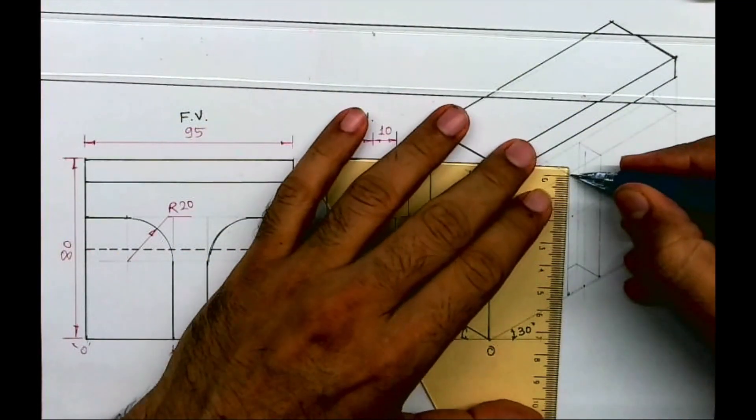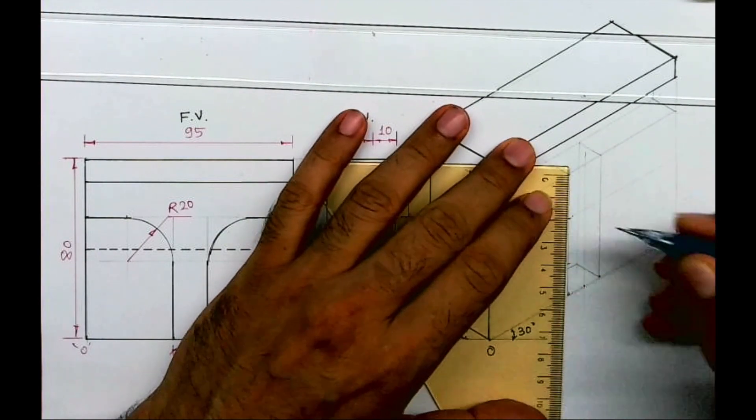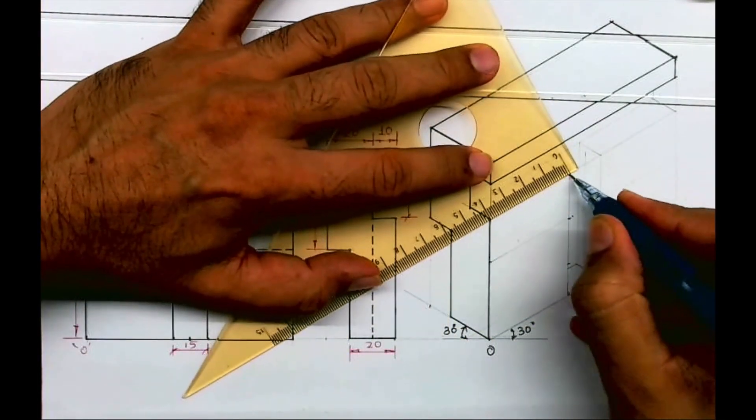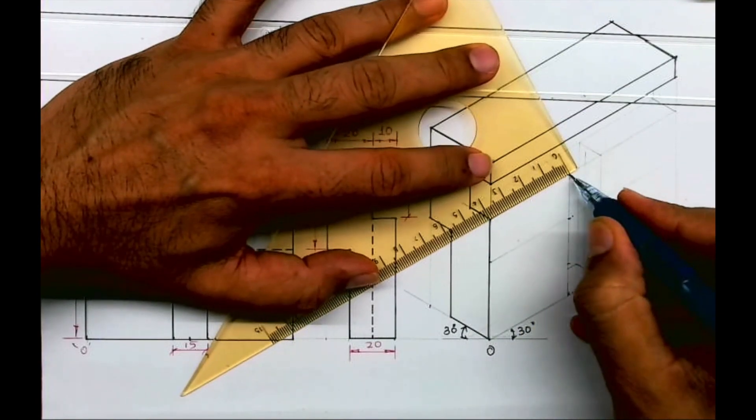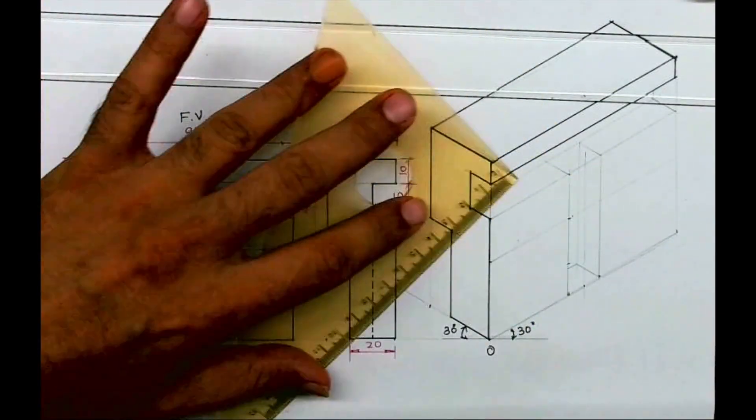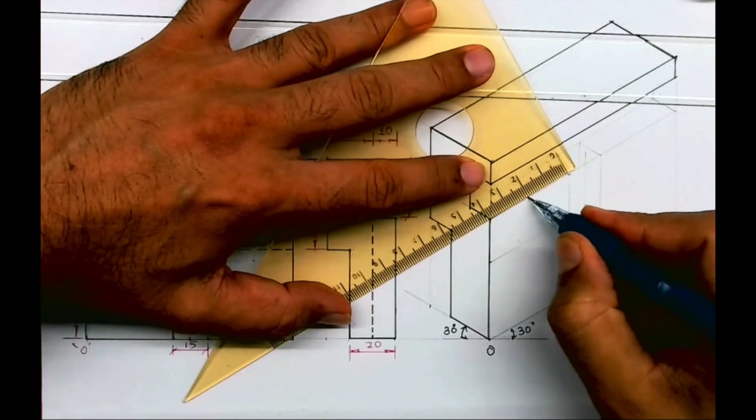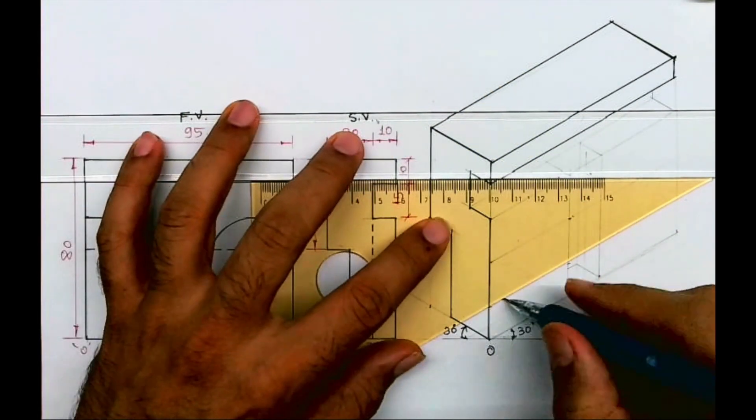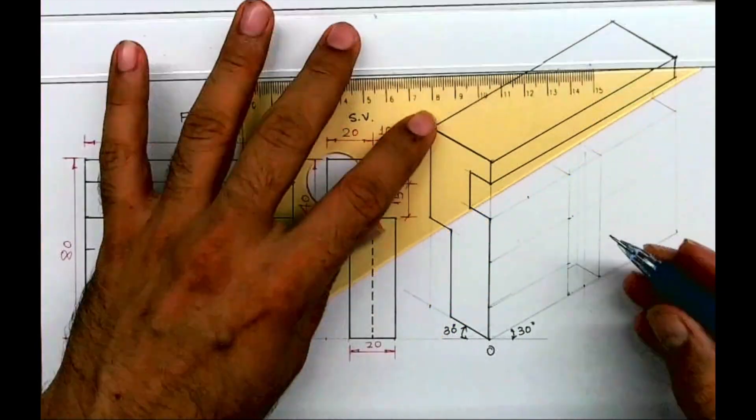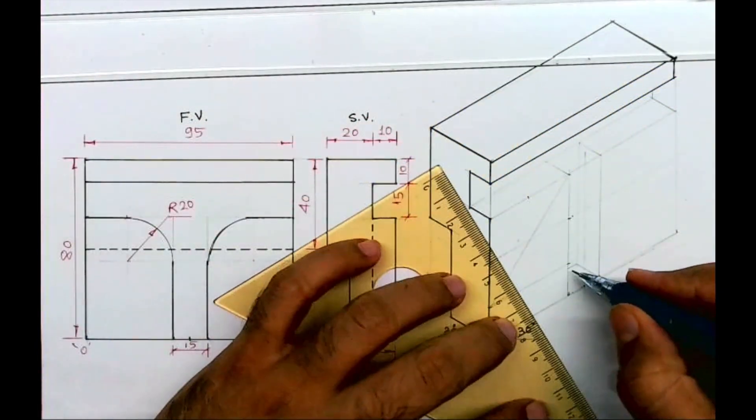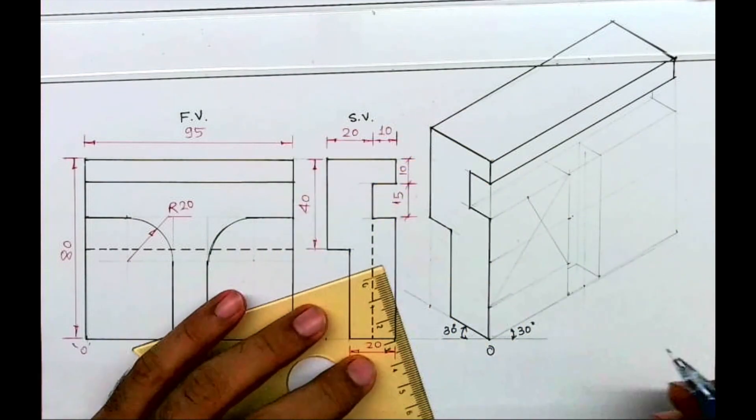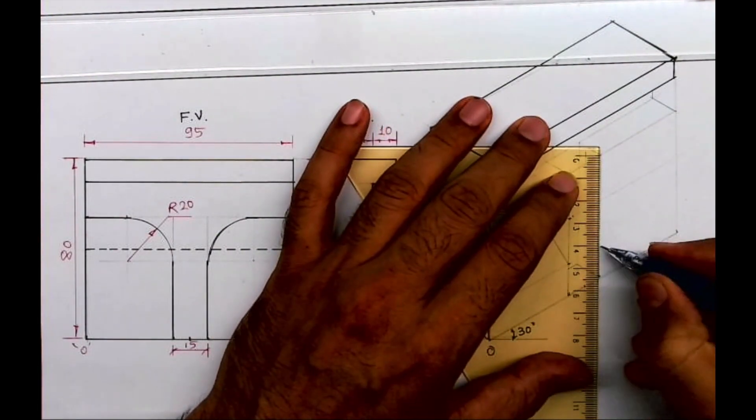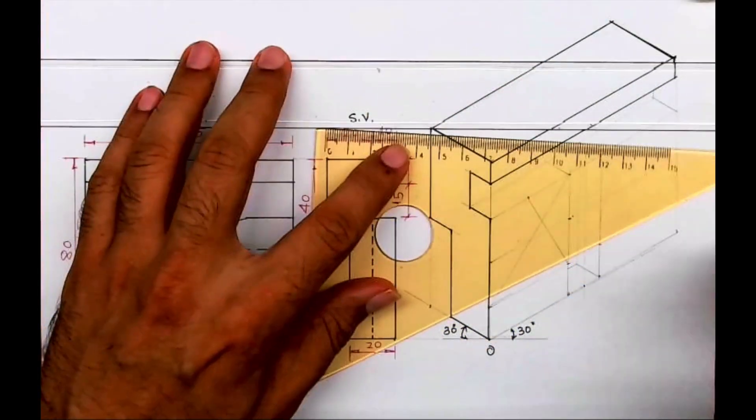Now we need to draw circle. So from here we'll take 40, and again from here we'll take 40. So I'll get a rhombus. Now I'll join longest diagonal.